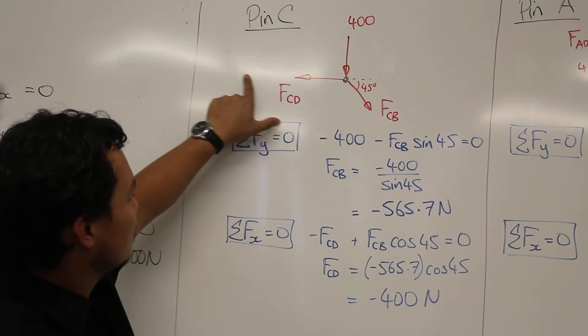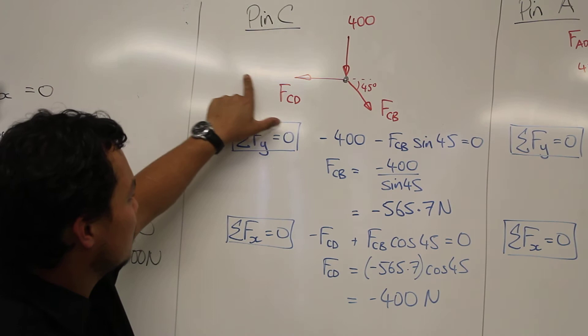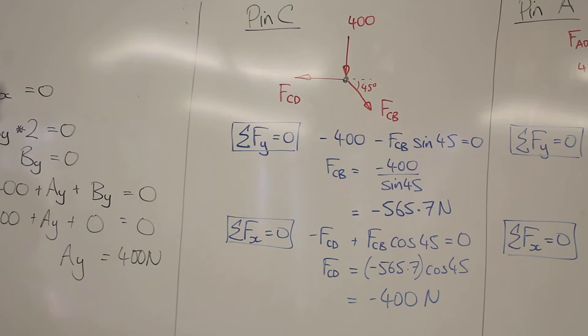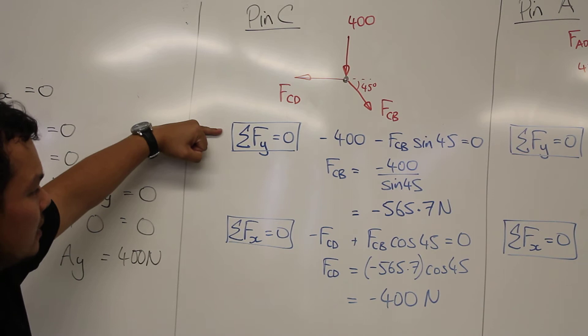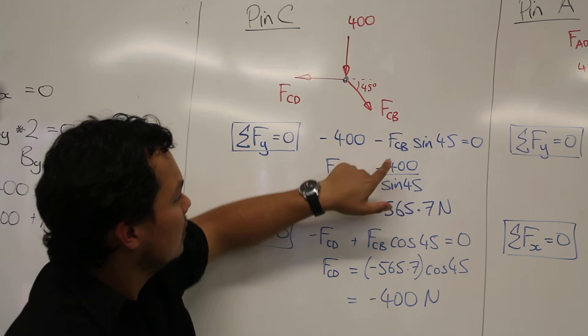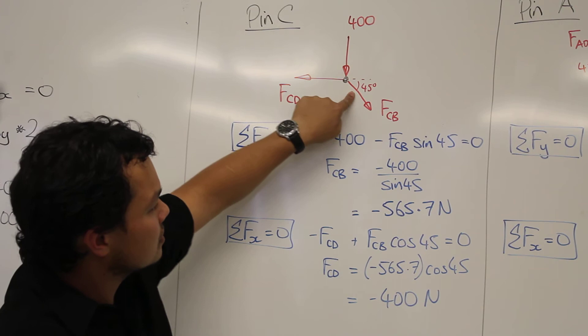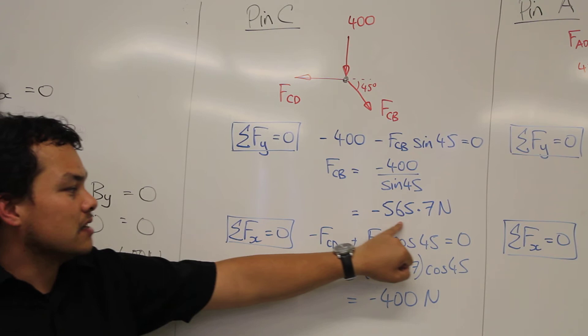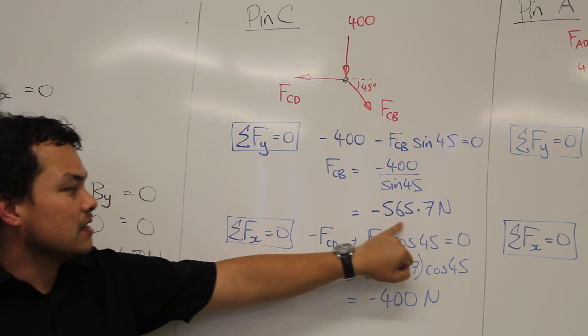So here we can draw a free body diagram of pin C. For pin C, we've got Fcd going towards the left, Fcb going down on an angle, and 400 newtons going down. So we've isolated that pin C and replaced all of the members with tension forces. Now, doing a balance of forces for each of these, we get Fy here, so 400 newtons going down, minus Fcb sine 45. So that's the y component of this force, and then no y component for this, because it's entirely in the x direction. Okay, so rearranging, we get Fcb equal to minus 565.7, which we have in class, and also Fcd equal to minus 400 newtons.